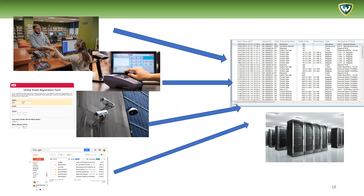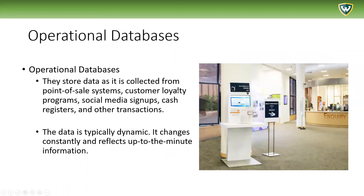Here's an image of all the different functions that add information to the databases. Because these are ongoing transactions and activities, they are probably being added to an operational database. Operational databases store data as it is collected from point-of-sale systems, customer loyalty programs, social media signups, online registrations, cash registers, and online or in-person self-checkout systems.